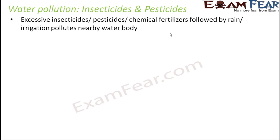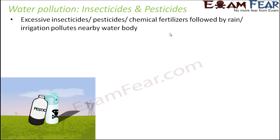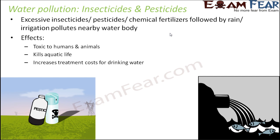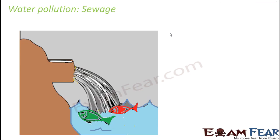Regarding insecticides and pesticides: when used in excess on agricultural land, if heavy rain falls shortly after application, the rainwater washes away the soil containing all these chemicals and discharges them into the nearby water body. This directly impacts aquatic life. First, the toxic chemicals are harmful to humans and animals dependent on that water. Second, it directly kills aquatic life. Third, the treatment cost for using that water for drinking increases significantly. It also adversely affects plant growth, as too many chemicals will not promote plant growth but have an adverse impact.